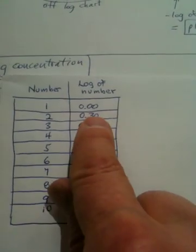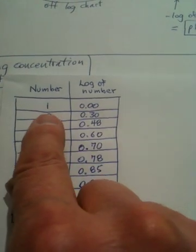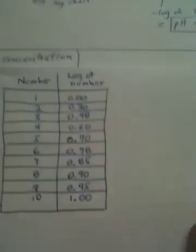We find the 0.15. 0.15 is between 0.30 and 0. And so we're going to approximate that as roughly 1.5.